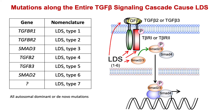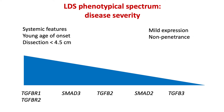All these genes so far inherit in an autosomal dominant fashion, meaning that there is a 50% chance of transmitting it to the next generation, or are the consequence of a de novo mutation. Over the years we have learned that there is a disease spectrum — on one hand the syndromic presentations with many systemic features and young age of onset with early onset dissections, and at the other end a milder expression with less systemic features and also occurrence of non-penetrance, meaning you can carry the gene mutation without having any phenotype at all.